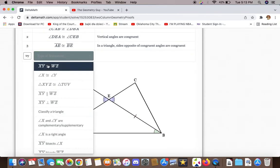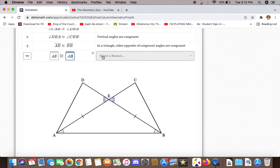We can also say that AB is congruent to itself because of the reflexive property.